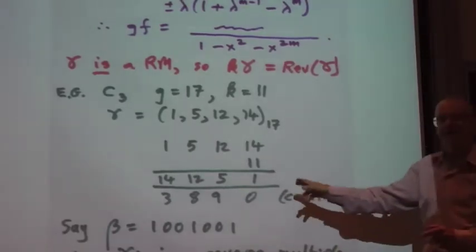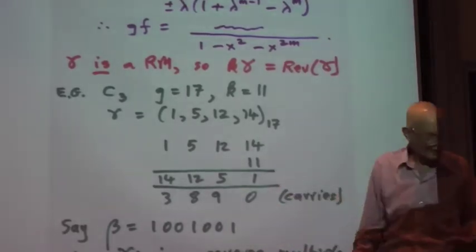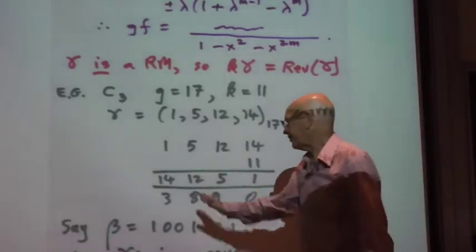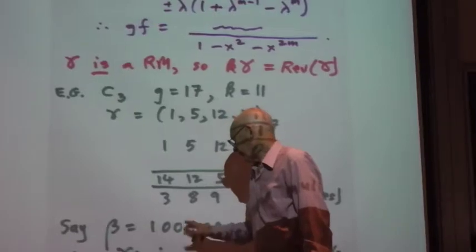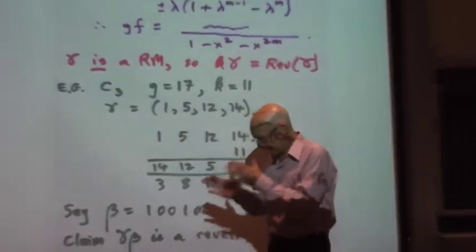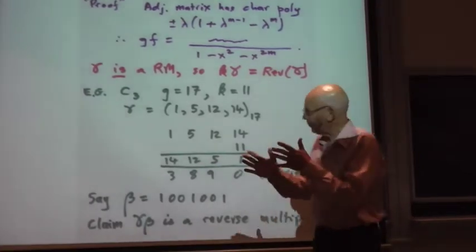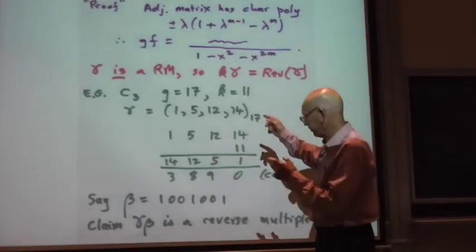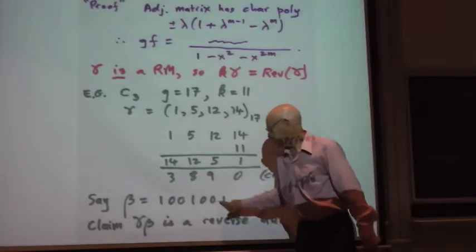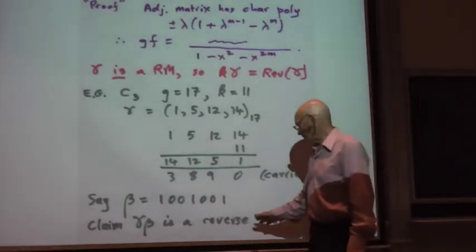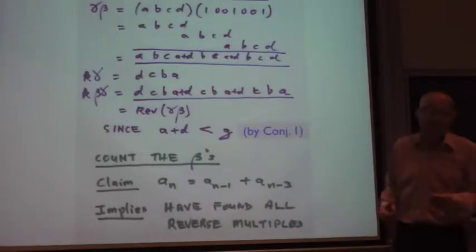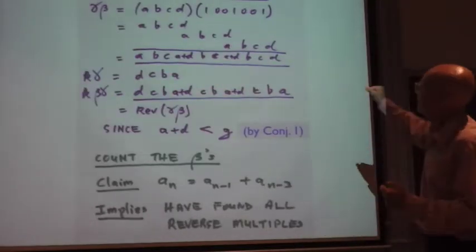So we verify directly that this is a reverse multiple. Now, the claim is that if beta doesn't have any runs of repeated ones, or any runs of zeros of length less than m minus 1, in other words, less than 2, so runs of length 2 zeros are okay. So this is a typical beta. I claim that gamma times beta is a reverse multiple.